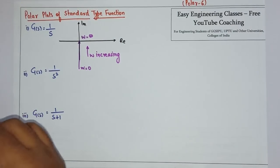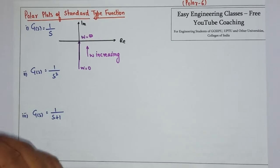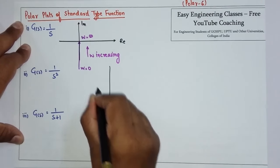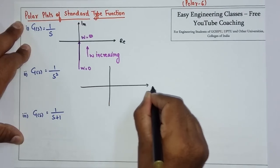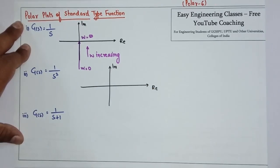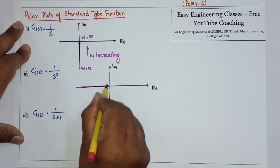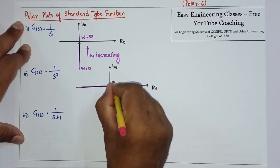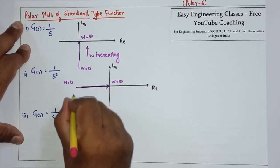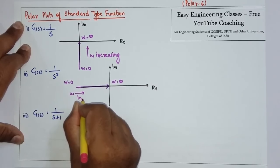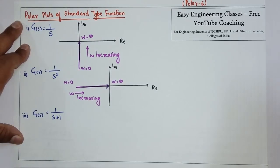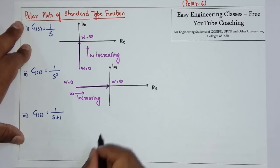Next is if G of s is 1 over s squared, so this polar plot will be like this. This is omega 0 and omega is increasing in this direction.